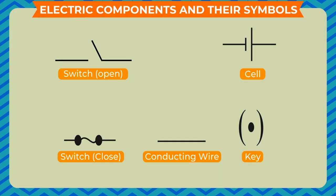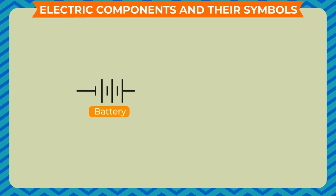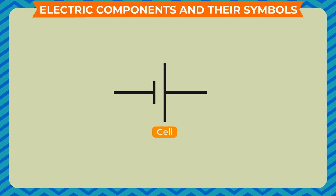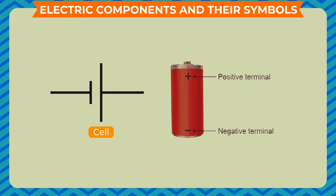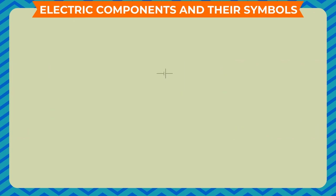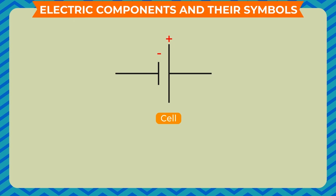Electric Components and Their Symbols. You may come across different symbols; however, we should be using the symbols shown here. In the symbol for electric cell, note that there is a longer line and a shorter but thick parallel line. An electric cell has a positive terminal and a negative terminal. In the symbol of the electric cell, the longer line represents the positive terminal and the shorter line represents the negative terminal. Some commonly used electric components with their symbols are shown here.